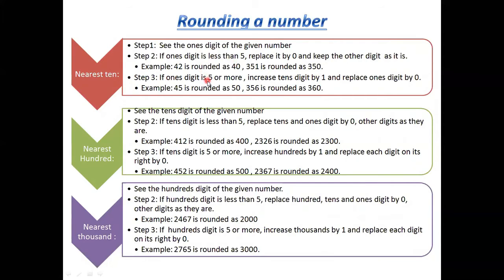For rounding to the nearest hundred, check the tens digit. If the tens digit is less than 5, replace tens and ones with zero. For example, 419 — tens digit is 1, so it rounds to 400. And 2326 rounds to 2300. If the tens digit is 5 or more, increase the hundreds digit by one and replace tens and ones with zero. So 452 rounds to 500 and 2366 rounds to 2400.